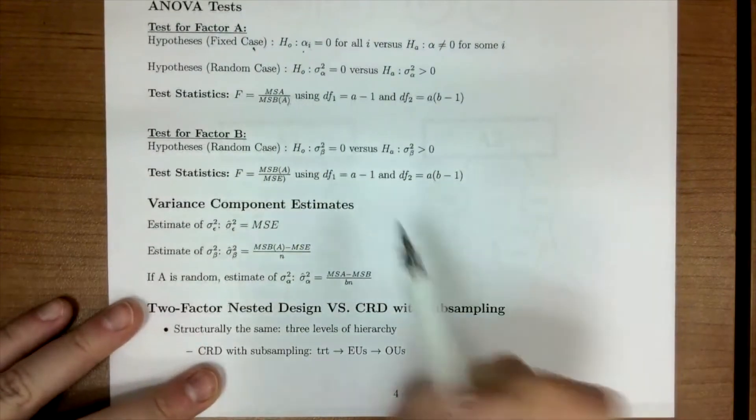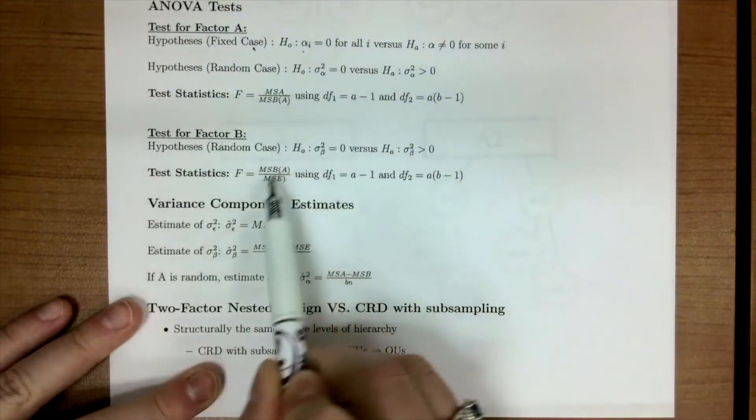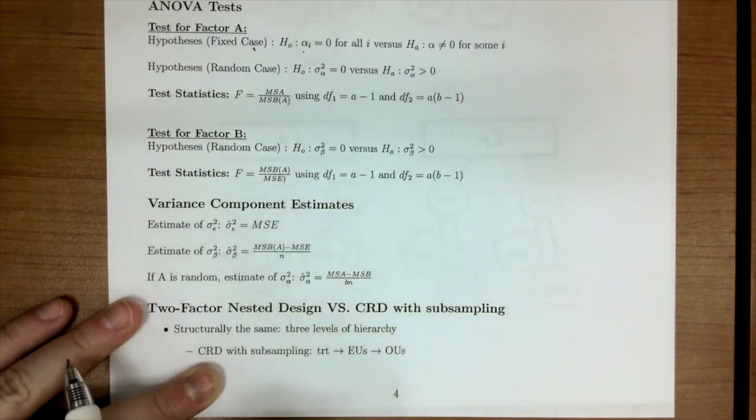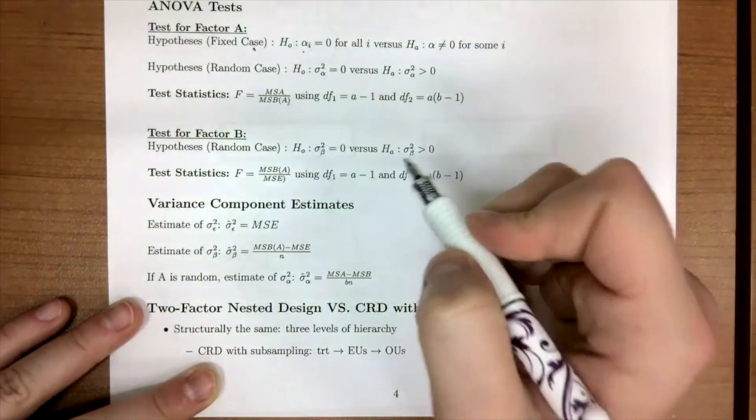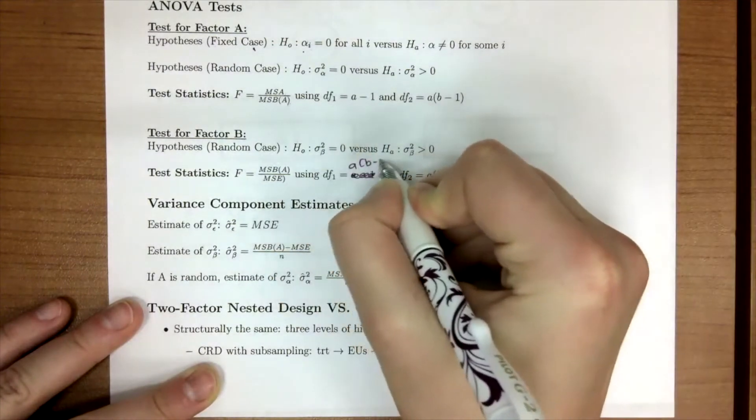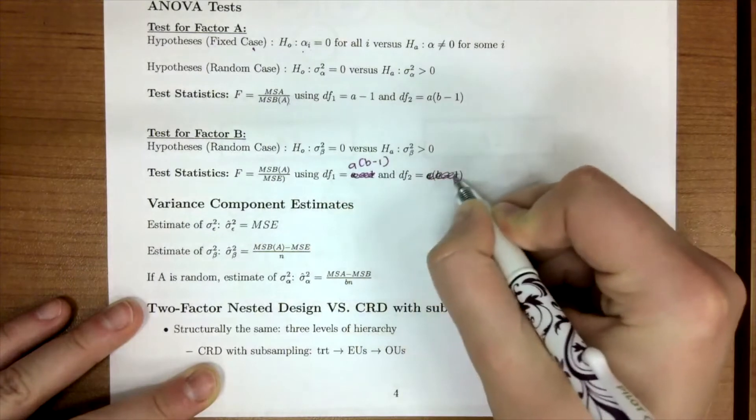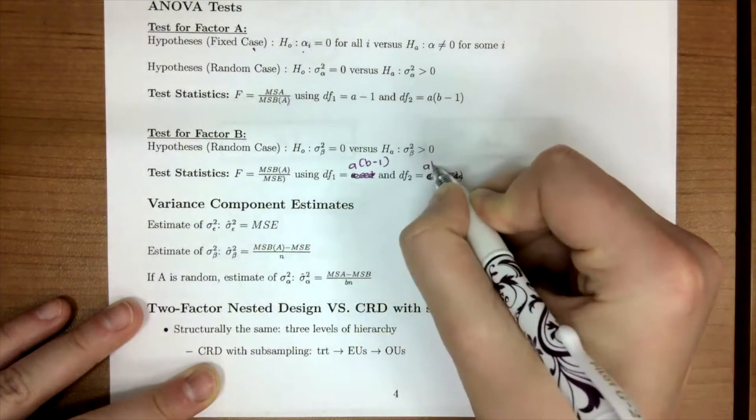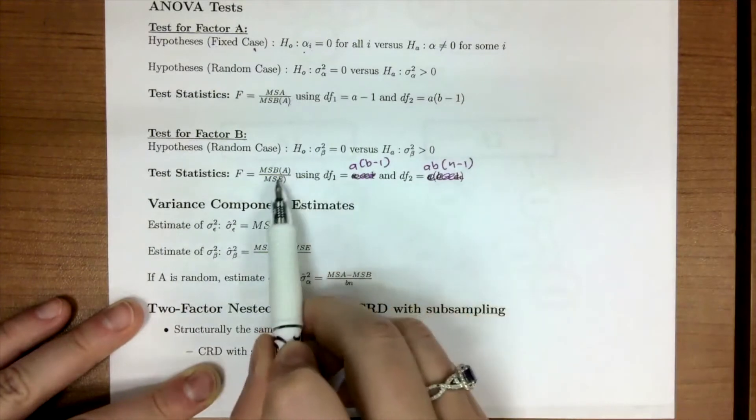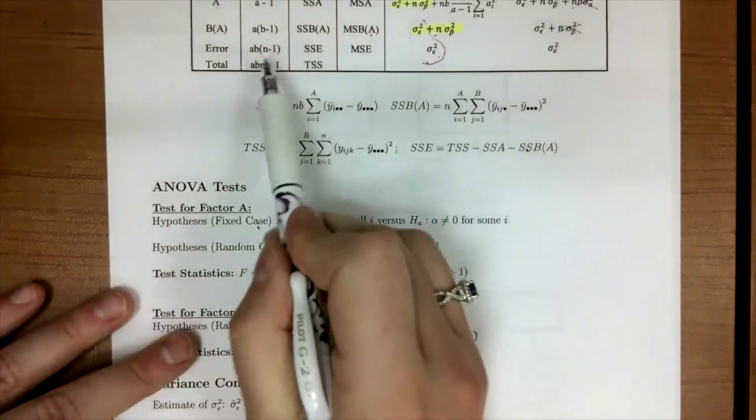So that's why, down here, our test statistic is MSB(A) divided by MSE, where this degree of freedom should be A(B-1). And this degree of freedom should be AB(N-1), because our degrees of freedom should match with our numerator and denominator. So that's where I'm getting them from.